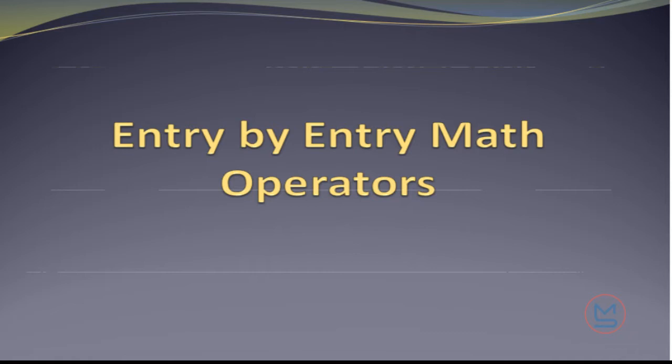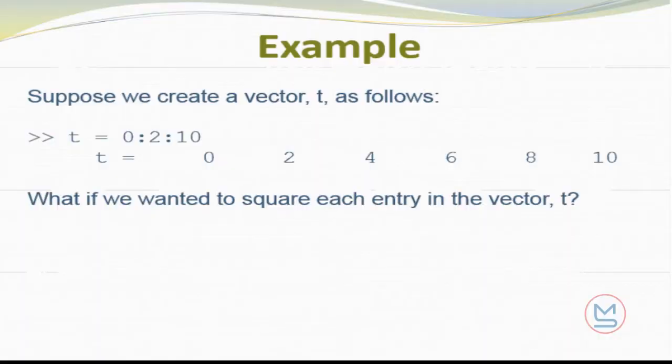So now we're going to go into a little bit about array operations. We're going to talk about entry by entry math operators provided by MATLAB. So suppose I create a vector T. I have T equals 0, colon 2, colon 10, so I know this is going to give me a starter value of 0, an increment of 2, and I'm not going to exceed 10, and in this case my last value actually ends up 10 because I have that nice even increment of 2. What if we wanted to square each entry in the vector T? What would you guess that you would do?